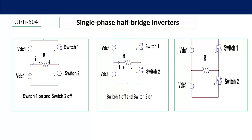Let's see the operation of the half bridge inverter using equivalent circuits. When switch one is on and two is off, no current flows in the lower loop. The current flows in the direction shown. When switch two is on, the current direction reverses and the polarity of the output voltage reverses as well — where it was positive it becomes negative. So both positive and negative voltages are obtained across the load, which is why we say DC voltage is converted to AC.